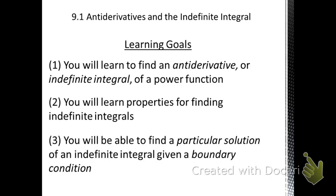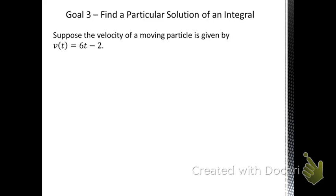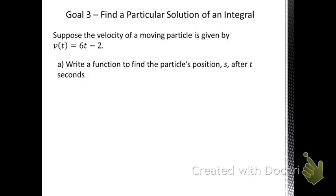We're going to be doing a couple of application problems, starting with this one: suppose that the velocity of a moving particle is given by the formula V(t) = 6t minus 2. I want us to start by writing a function to find the particle's position s after t seconds.